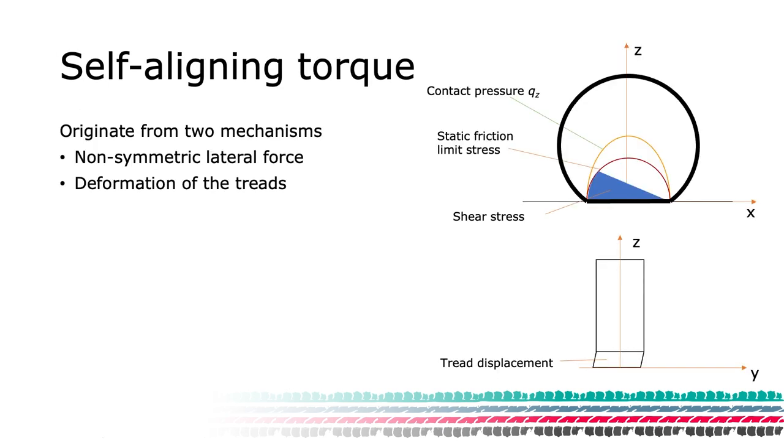In vehicle dynamics, we are often interested in the torque around the Z-axis. Since this torque strives to reach a zero position, it is often referred to as the self-aligning torque. This torque can be felt in, for example, the steering wheel of a car or the handlebar of a bicycle, together with other torque components originating from steering geometry.